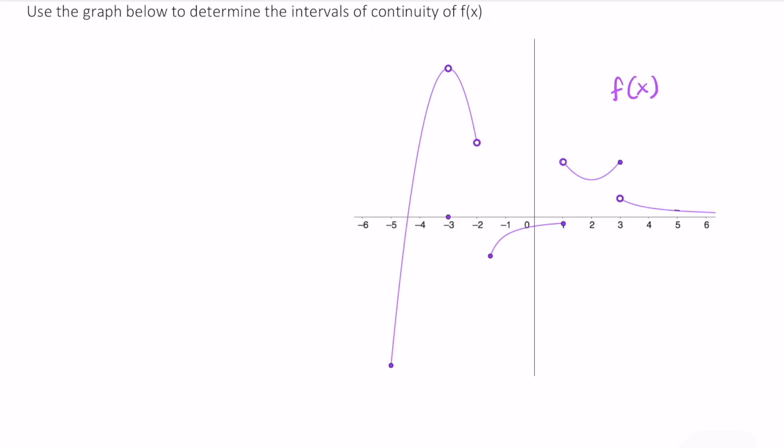So when we're determining intervals of continuity, we really just need to focus on the numbers along the x-axis. So let's start from the smallest place where f of x is defined, and that would be here for x equals negative 5.